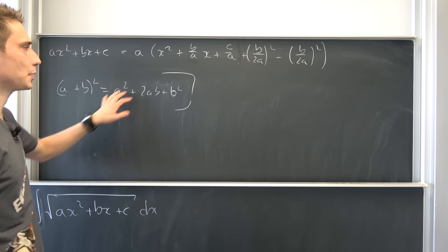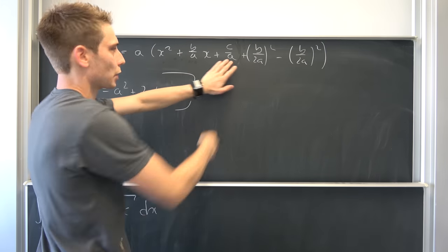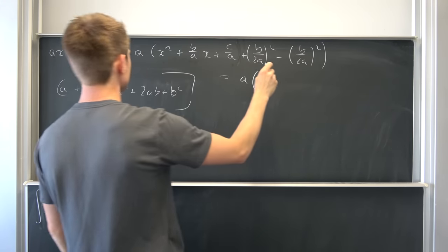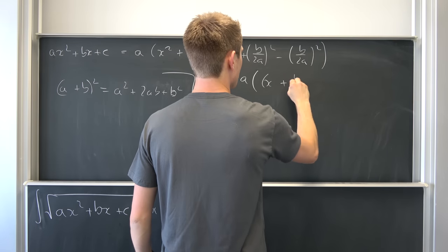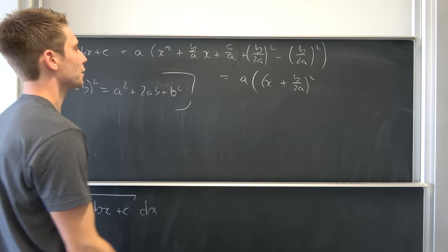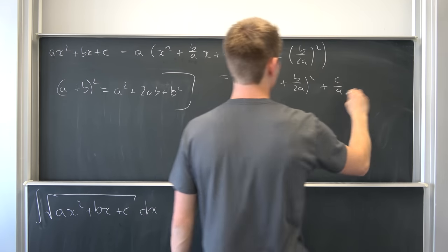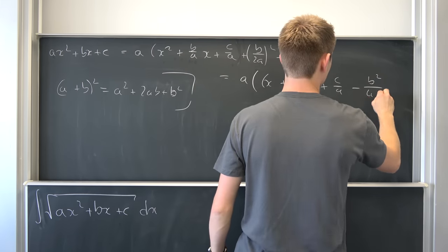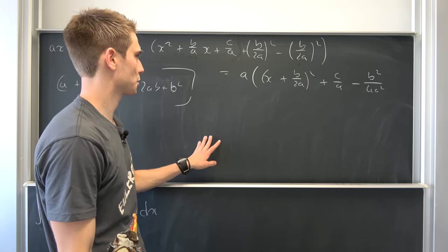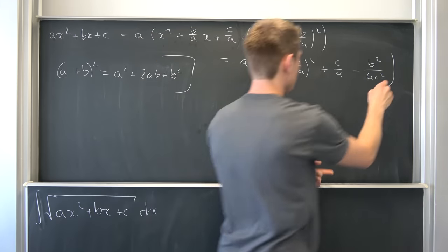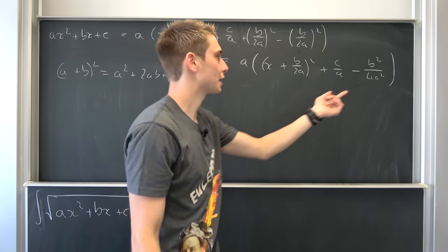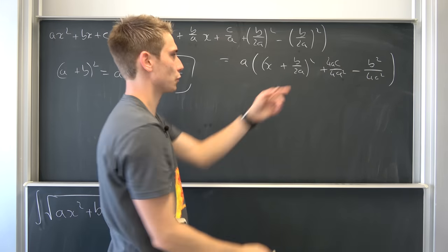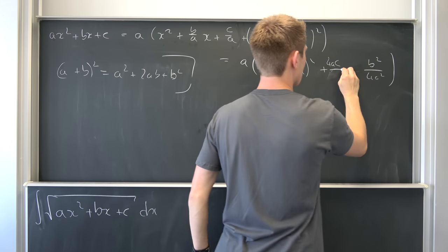We can use this exact binomial formula on those three terms right here, and then we have this constant factor left. So we have a times (x + b over 2a)² and also we have plus c over a minus b² over 4a². Now we could just for simplification purposes bring those two together — advancing this fraction by 4a over 4a. Then we have this and we can bring those two fractions together. I hope you can see where this came from.